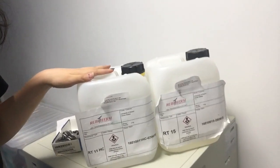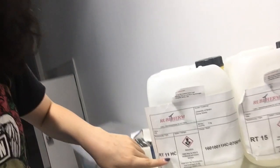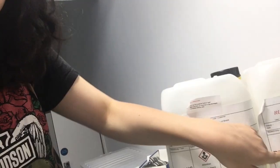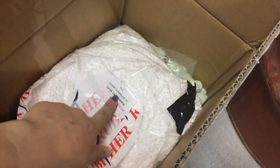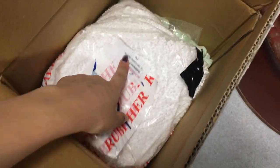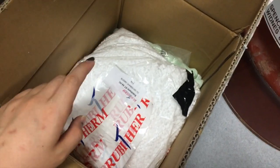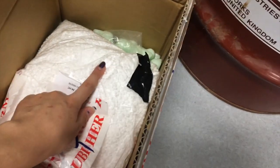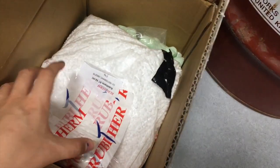These are the PCMs. This one is RT64, RT15, and there's another one in this box. What do all those numbers mean? If this is 64, then it means that it melts at 64 degrees Celsius. So now it's in a solid state and we're going to use this one in the experiment.